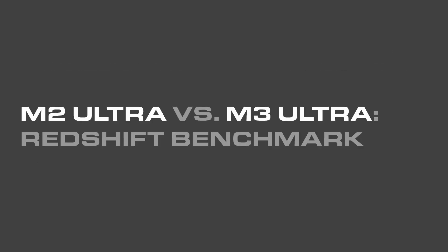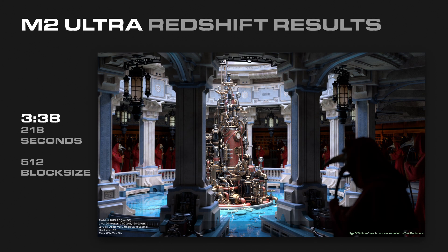Next up, we have the M2 Ultra vs. M3 Ultra Redshift Benchmark. This is the built-in benchmark that ships with Redshift. The M2 Ultra Redshift Benchmark came in at 3 minutes and 38 seconds, or 218 seconds, with the block size set to 512 in the render settings.